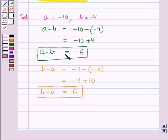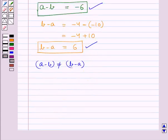We have got A minus B equal to minus 6 and B minus A is equal to 6. This shows that A minus B is not equal to B minus A. Hence proved.